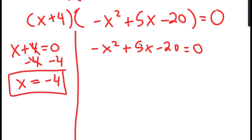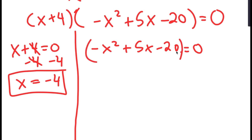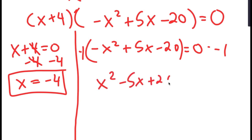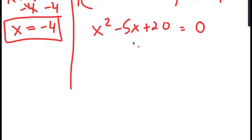Now, for negative x squared plus 5x minus 20 equals 0, we have a negative sign in front of x squared. So I'm going to get rid of that by multiplying both sides by negative 1. So I get x squared minus 5x plus 20 is equal to 0.